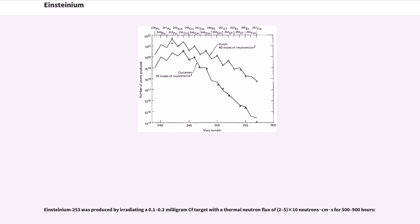Einsteinium-253 was produced by irradiating a 0.1 to 0.2 milligram Cf-252 target with a thermal neutron flux of 2 to 5 times 10^14 neutrons per square centimeter per second for 500 to 900 hours.